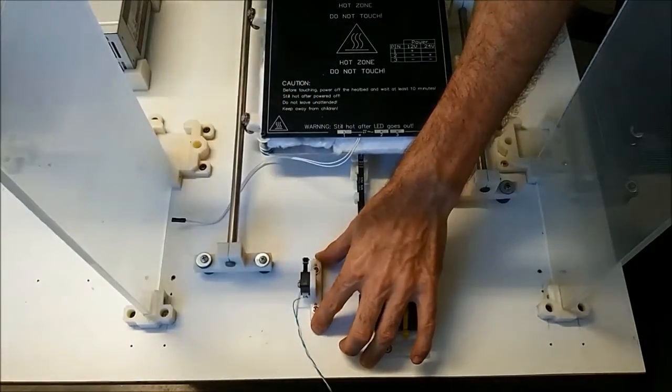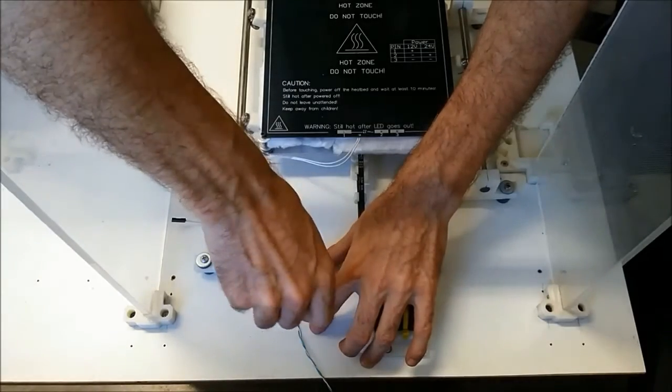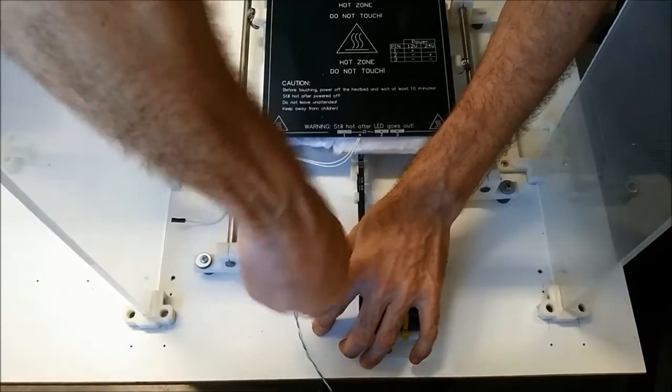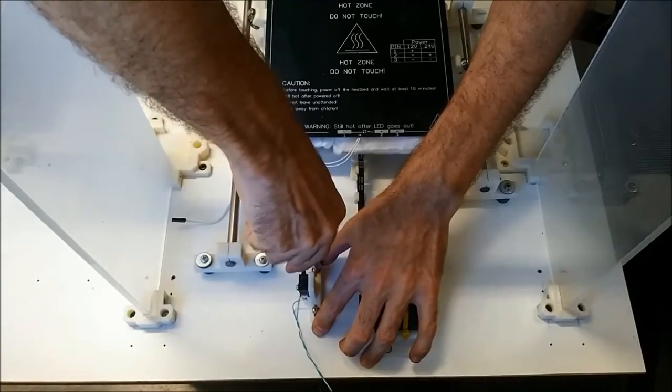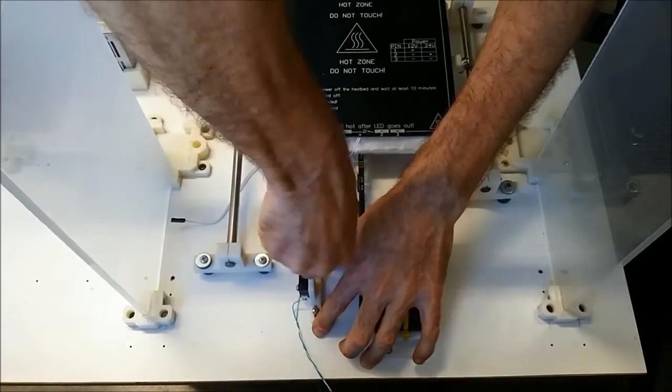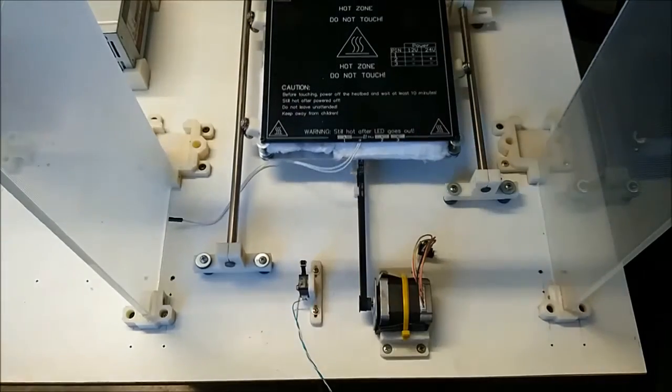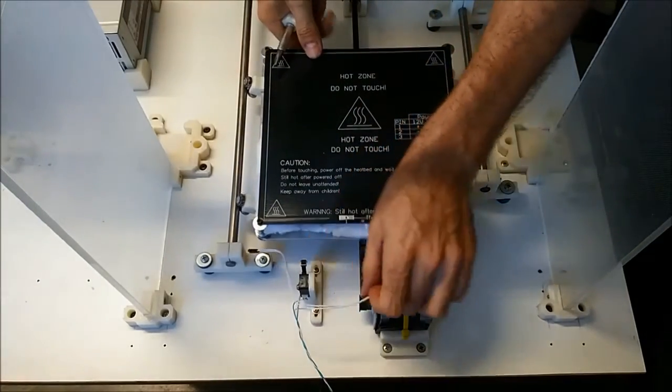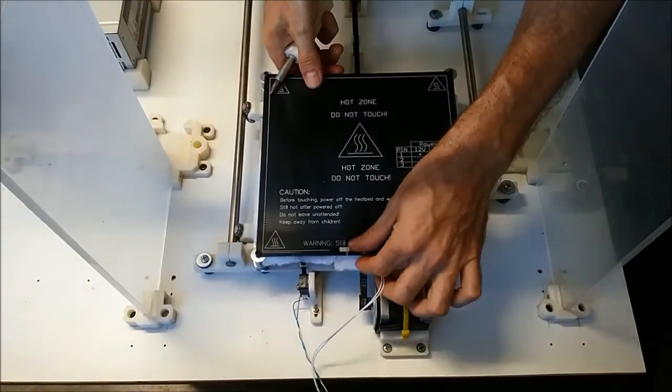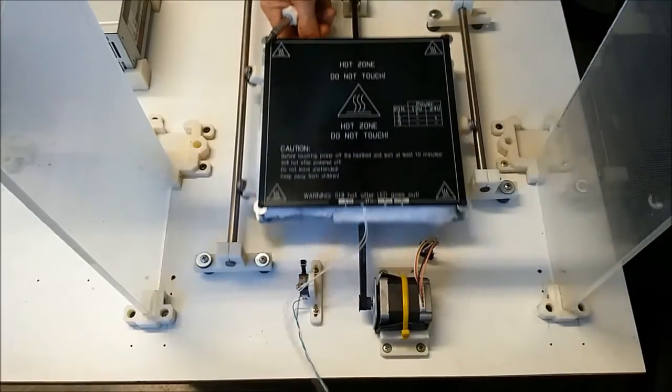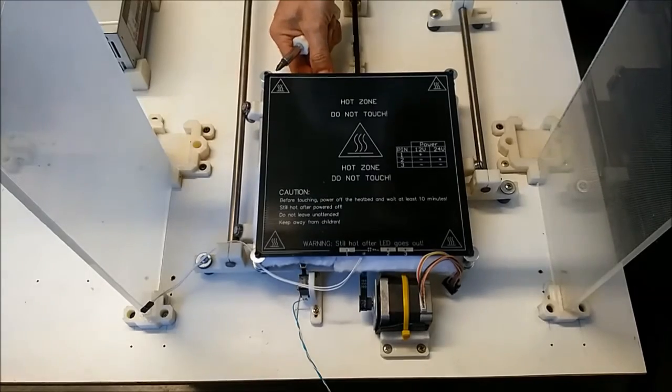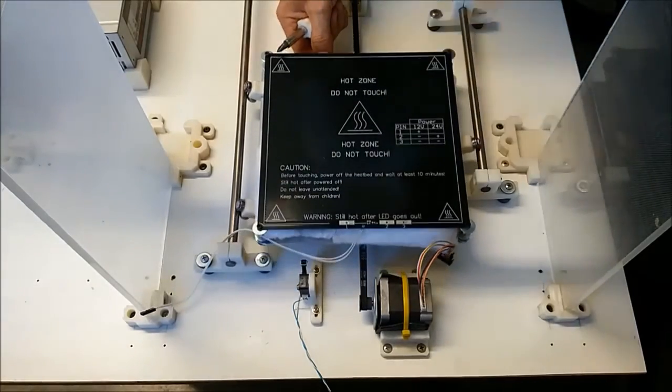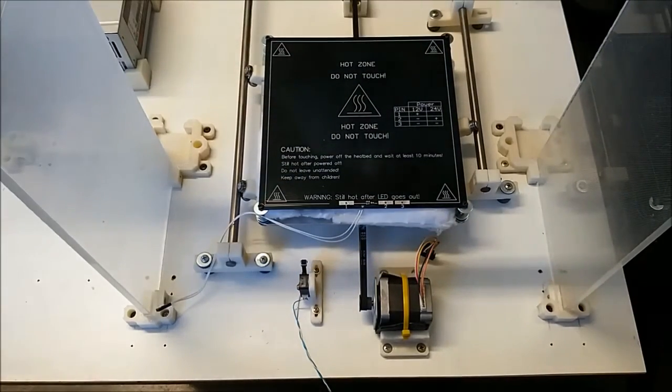And don't worry about the position yet, so don't have to make it too tight. We'll be adjusting it later when we do the calibration. Just make sure that it can come back freely and hit that. That's pretty much the way we want it. So that's that step done.